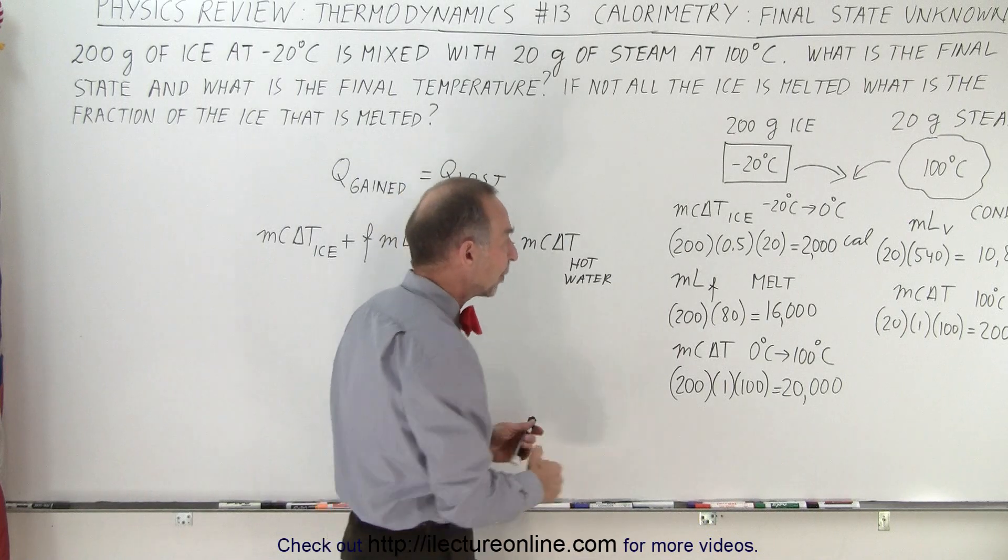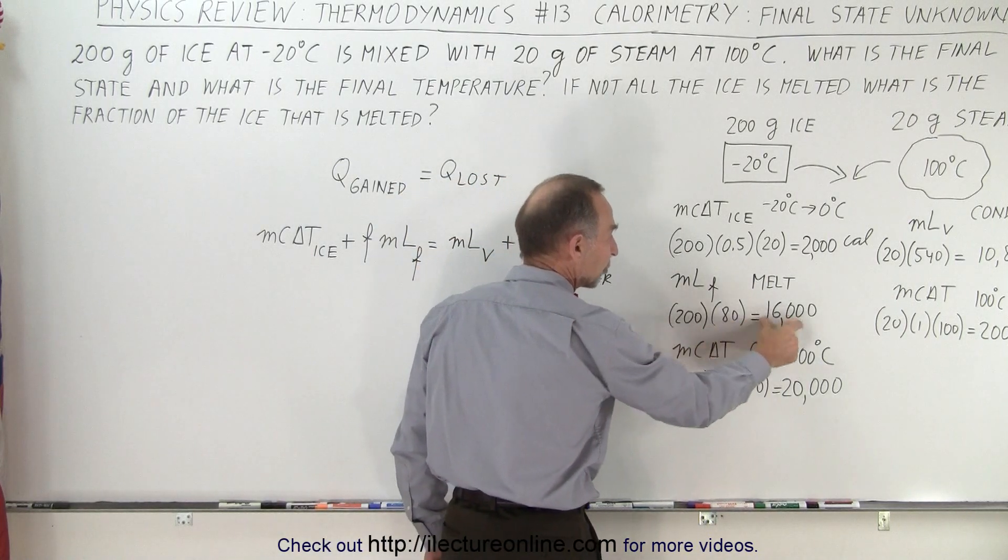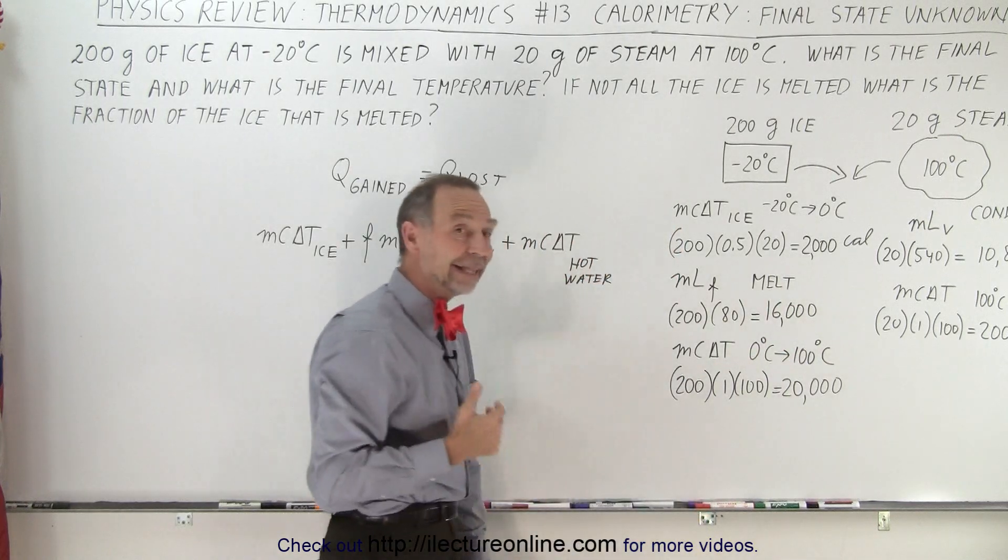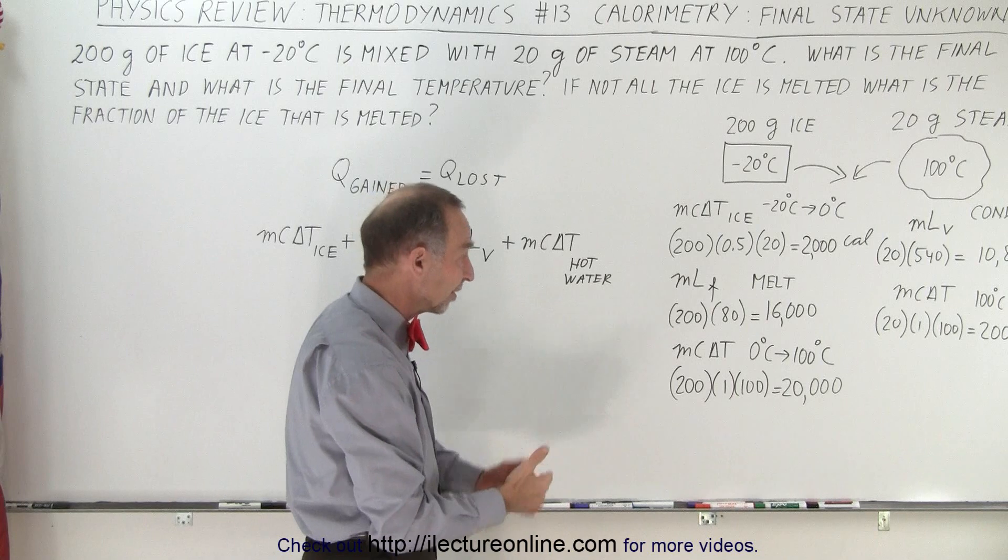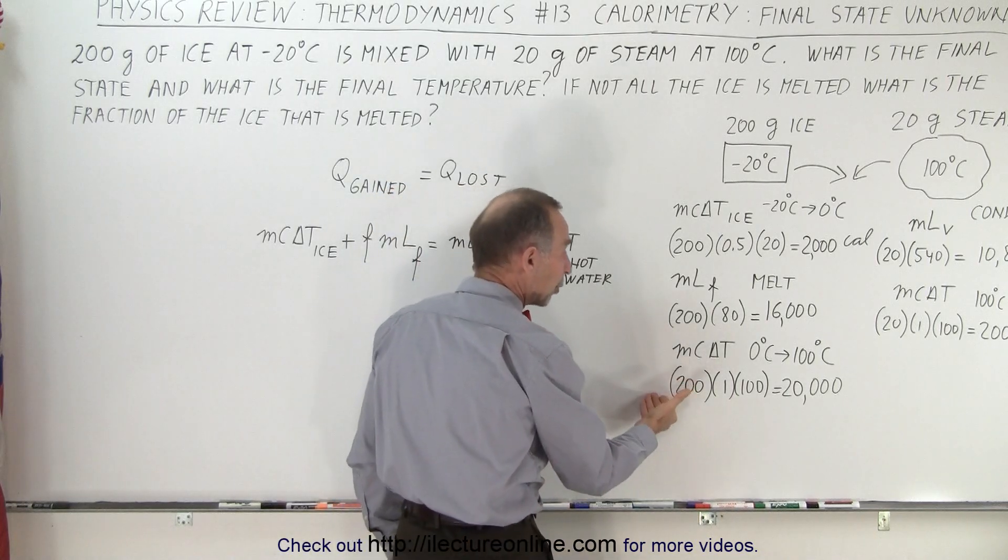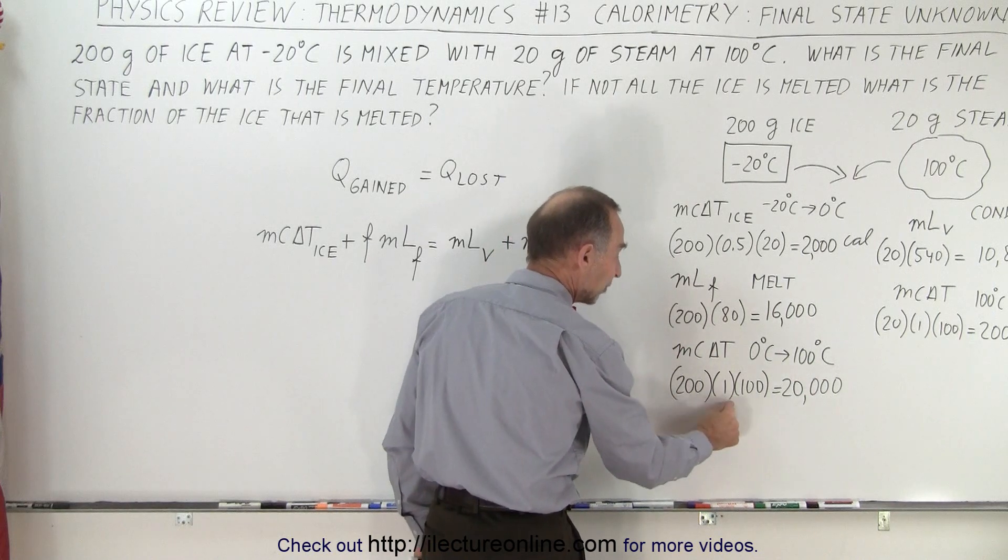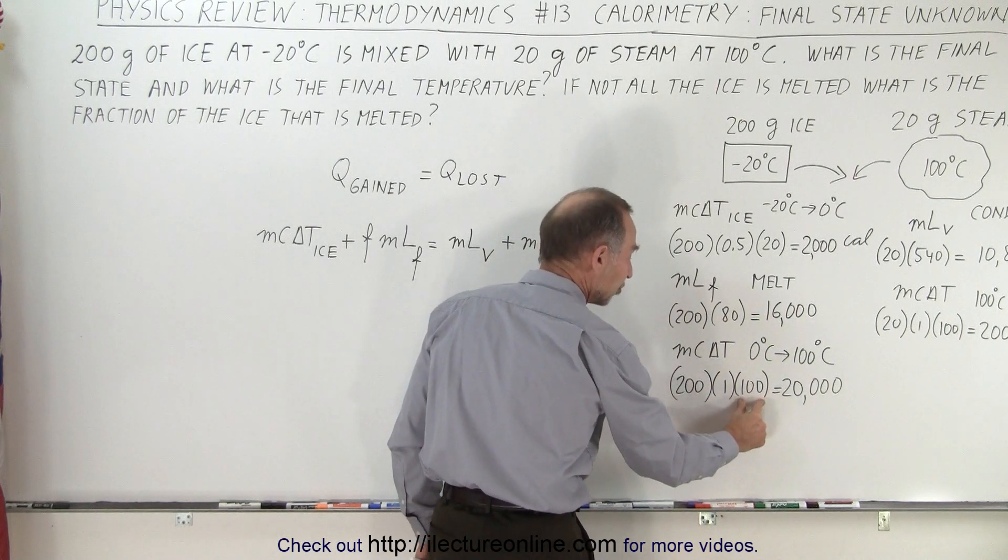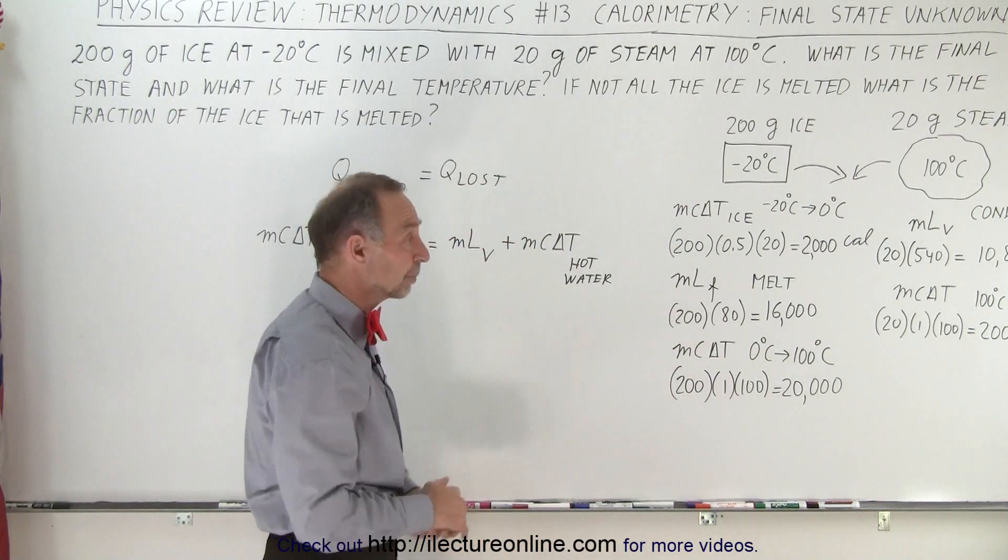And then we need to melt the ice. Well, it's 200 grams, and it takes 80 calories per gram to melt it, so 16,000 calories. And then if we took that melted ice, which is now cold water at 0 degrees Celsius, how much heat would it take to get it all the way up to 100 degrees Celsius? We take the mass times the specific heat of water times the change in temperature, another 20,000 calories to get it all the way up to the boiling point.